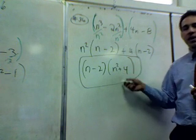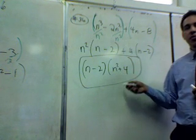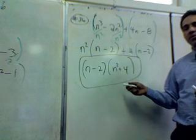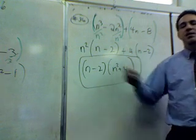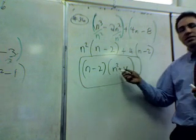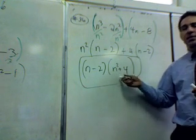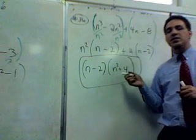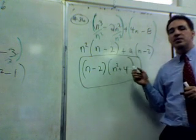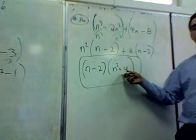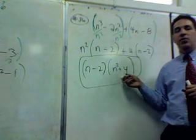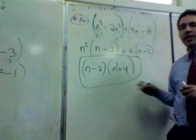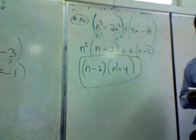Is there anything else we can factor? We have n squared plus 4 — it looks like it might be difference of squares, but it has a plus sign, making it a sum of squares. We can only factor difference of squares when there's a minus sign; a sum of squares cannot be factored. So (n minus 2)(n squared + 4) is our final answer.